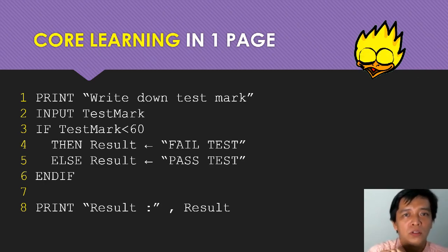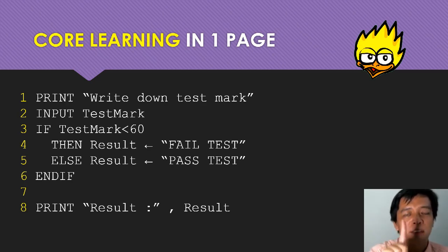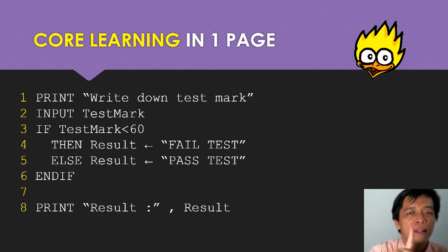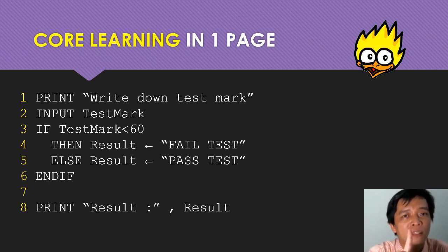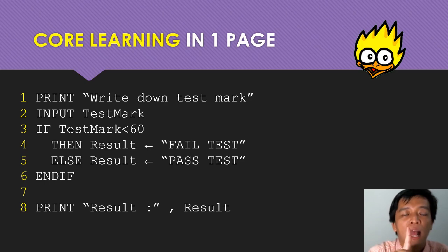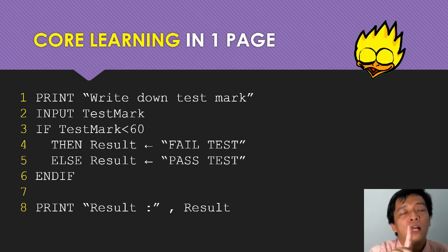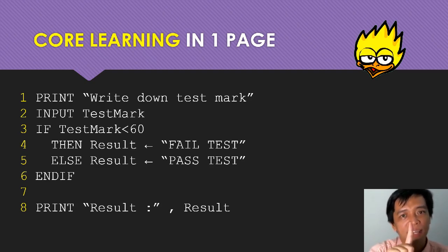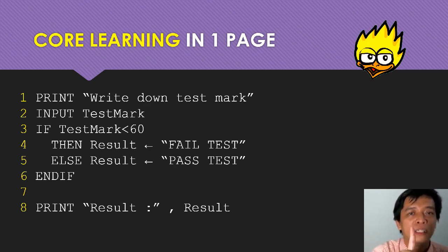In the Pseudocode learning, the first one is conditional statement, which is IF, THEN, ELSE, and ENDIF. Let's say, if you are this, then you get this. This conditional statement also includes CASE OF, OTHERWISE, and ENDCASE. This is the first type of conditional statement.